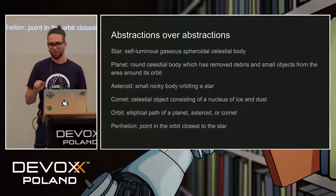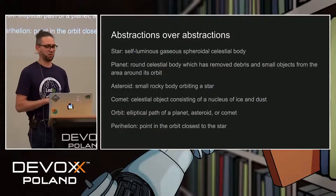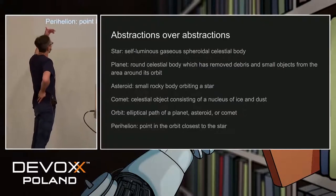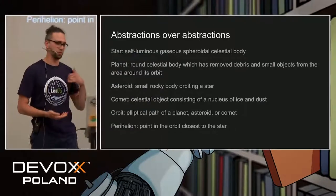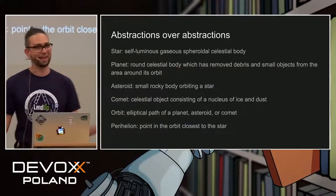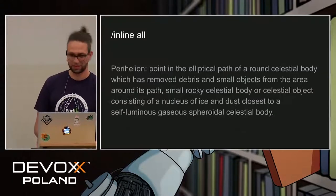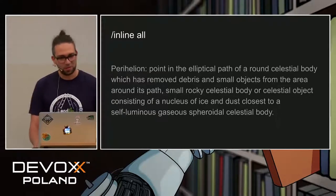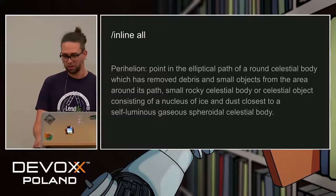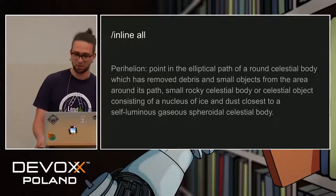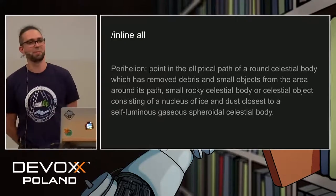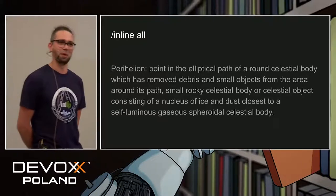A quick demonstration of what it would be like without abstractions: here we have a definition of 'perihelion,' which is defined in terms defined above — orbit, comet, asteroid, planet, and star. Now, if we inlined all those definitions to define a perihelion, you get: 'a point in the elliptical path of a round celestial body which has removed debris and small objects from the area around its path, small rocky celestial body or celestial object consisting of a nucleus of ice and dust, closest to a self-luminous gaseous spheroidal celestial body.' That's how programming in assembly would look if you wanted to develop a web application with it.